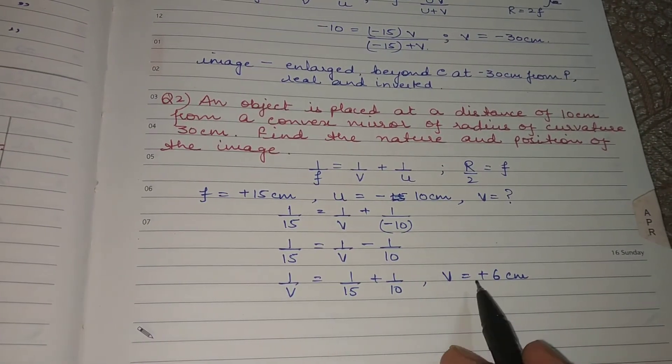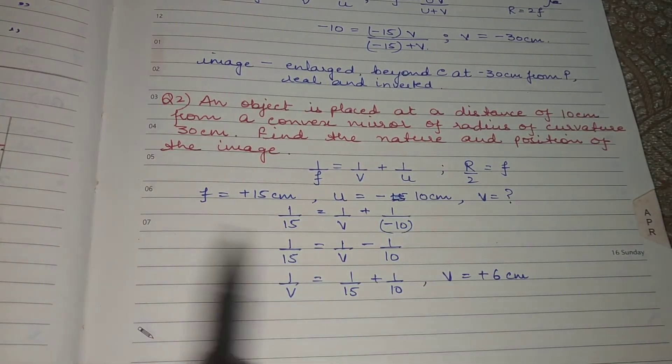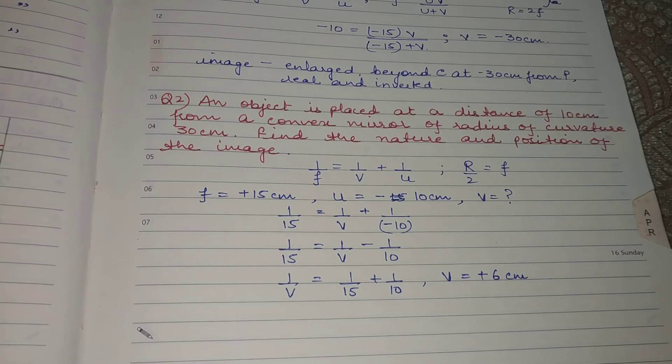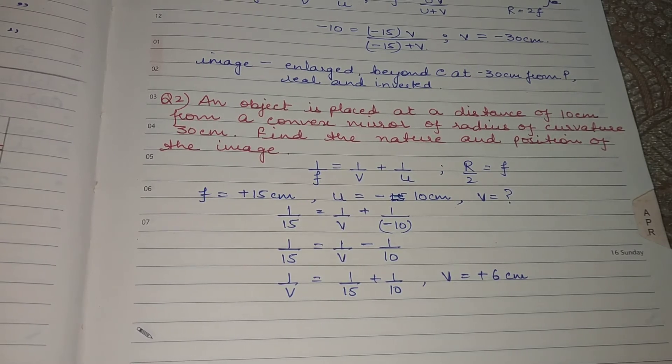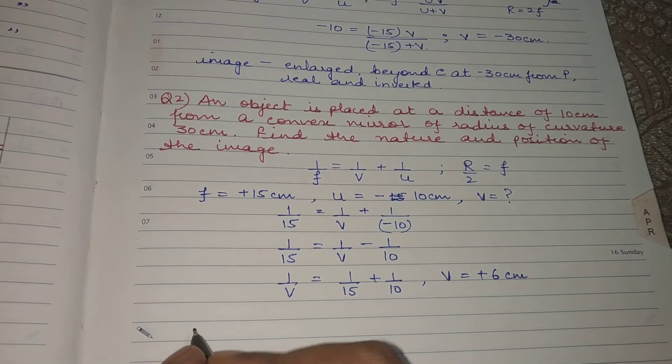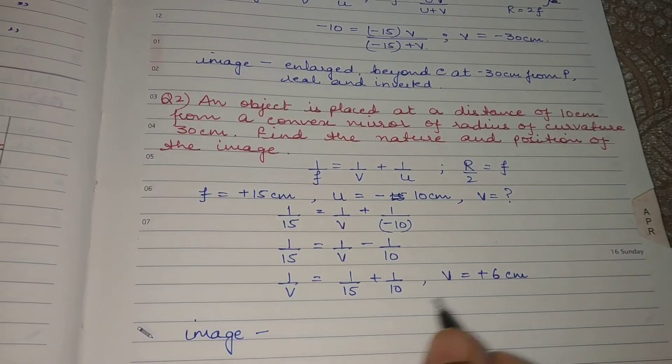So that is the answer for position of image. But what is the nature? Doesn't matter where you keep the object, the nature of the image is always virtual. And it is formed behind the mirror between f and p.